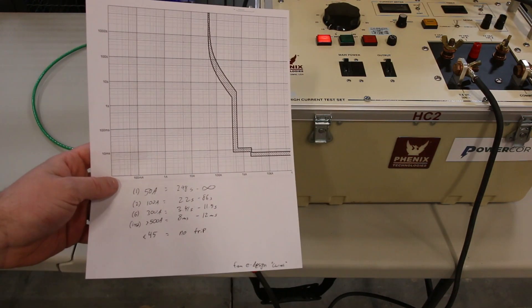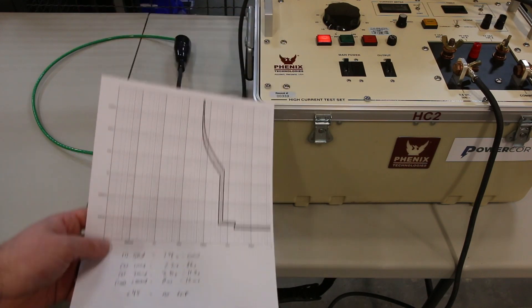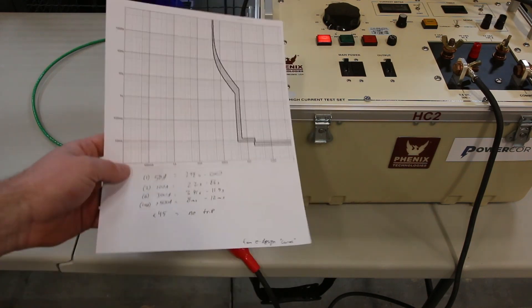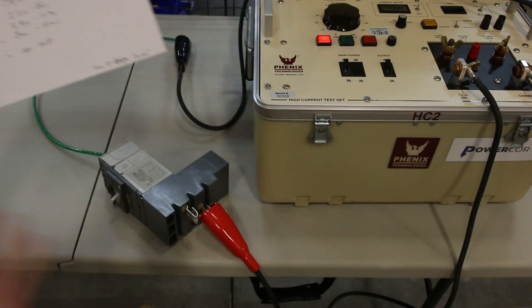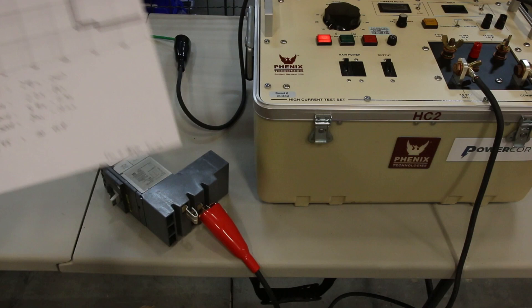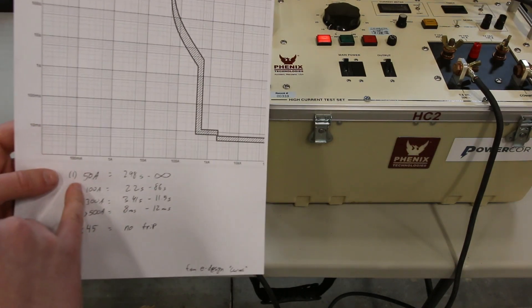I grabbed this right off the ABB eDesign curves program. Open letter to ABB: Put your curves in the manual. Don't make me download software. So looking at this one, I punched in the XT1H 50 amp frame. My nominal current, my nominal pickup is about 50 amps.